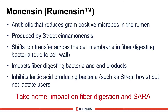Rumensin is produced by a strain of Streptococcus bacteria. What it does is shift ions across cell membranes, reducing the growth of fiber-digesting bacteria because they must expend extra energy to move those ions out. This impacts fiber-digesting bacteria and their end products, changing the fermentation profile in the rumen. It also inhibits lactic acid-producing bacteria such as Strep bovis, but not lactate utilizers, giving it a beneficial effect on lactic acid buildup. The take-home message: it will impact fiber digestion and SARA.